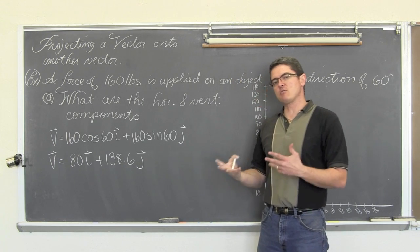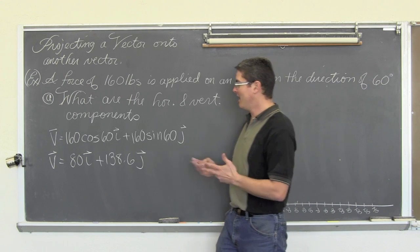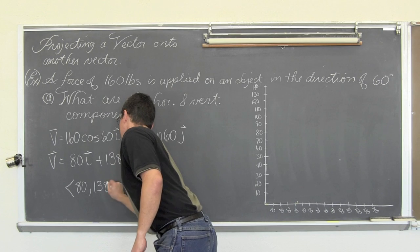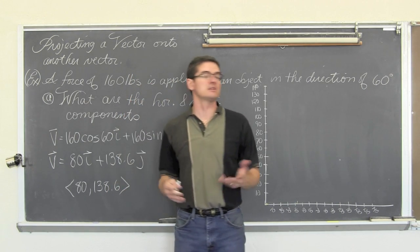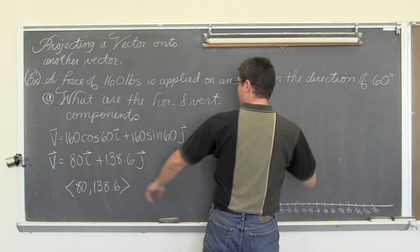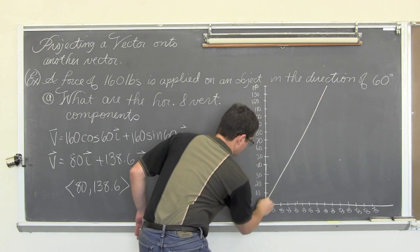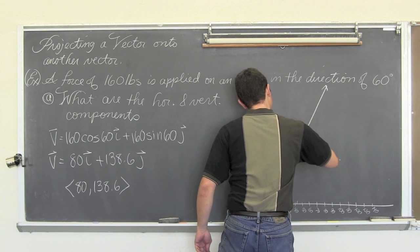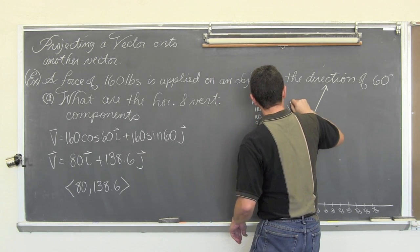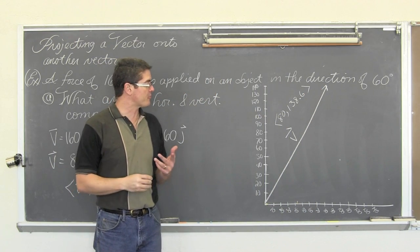I am going to try and, for the rest of this example, lose all the i and j component notation because I find it highly annoying. I am just going to write this as vector 80, 138.6. So that means that this vector, 160 pounds, angle of 60 degrees, has a component of 80 and almost 140. So, there we go. There is vector v. And again, it is 80, 138.6. I won't refer to that again until we do this second half of the problem.